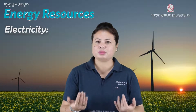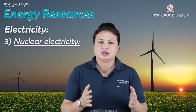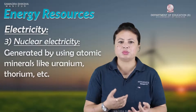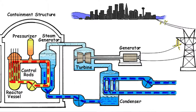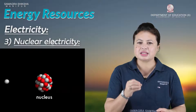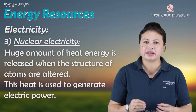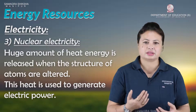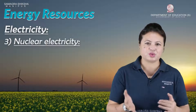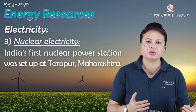Nuclear electricity uses nuclear minerals like uranium and thorium. When uranium undergoes nuclear fission, the atomic structure disintegrates, releasing large amounts of heat. This heat is used to drive turbines and generate nuclear electricity. In India, the first nuclear power plant station is Tarapur in Maharashtra.